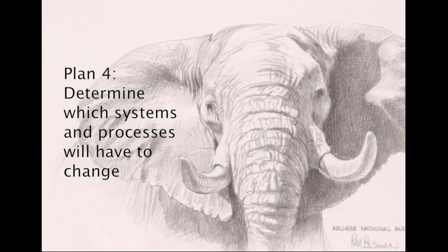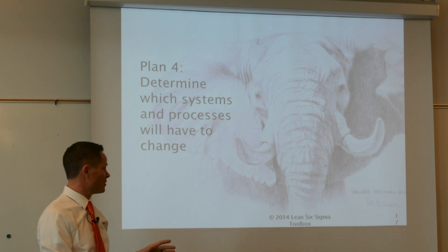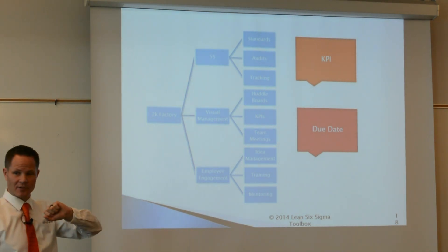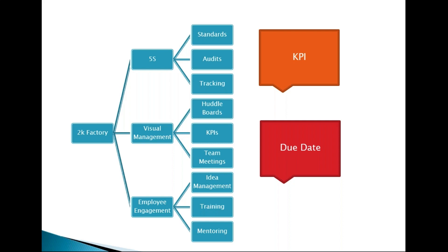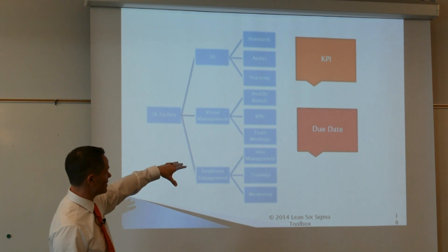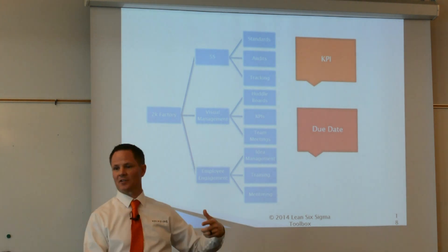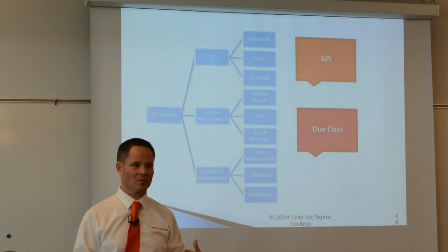Step four: which systems and processes have to change for you to get there? Break the big elephant into bite-sized pieces. At Lavender Mattress we identified 5S, visual management with KPIs and huddle boards, and employee engagement — giving employees time to actually solve problems. For each item, you need a way to measure it and a due date, because without a due date it'll never get done.